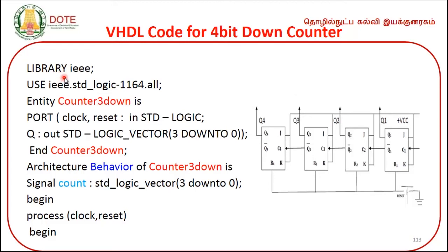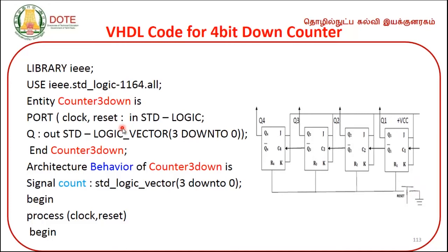The program starts with: library IEEE; use IEEE.std_logic_1164.all; Then the entity is declared with entity name 'counter3_down'. Inside, we declare the port with inputs: clock and reset, using 'in std_logic;'